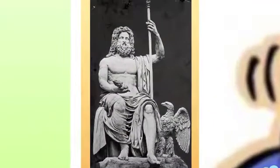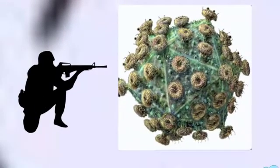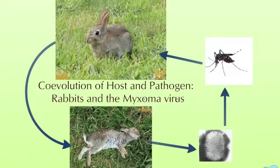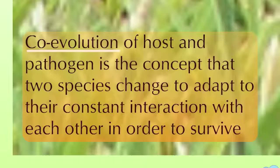Have you ever been sick and wondered what divine being was punishing you? Instead of a giant angry god, disease is actually caused by small pathogens, such as viruses and certain bacteria. You may wonder why haven't they been eliminated, due to our bodies constantly evolving to fight such invaders. Turns out the pathogens are evolving with us. This is a simple concept known as co-evolution of host and pathogen — the concept that two species change to adapt to their constant interaction with each other in order to survive.